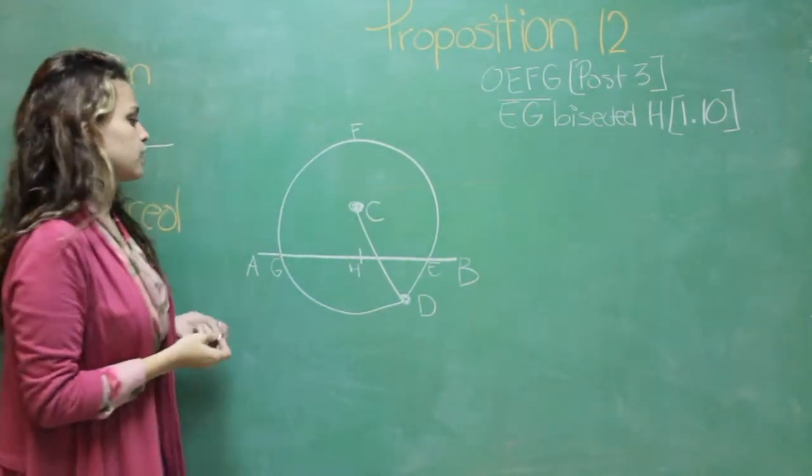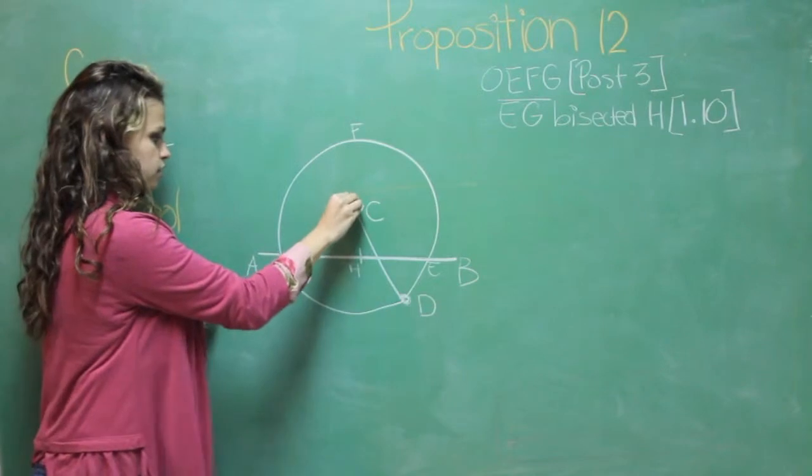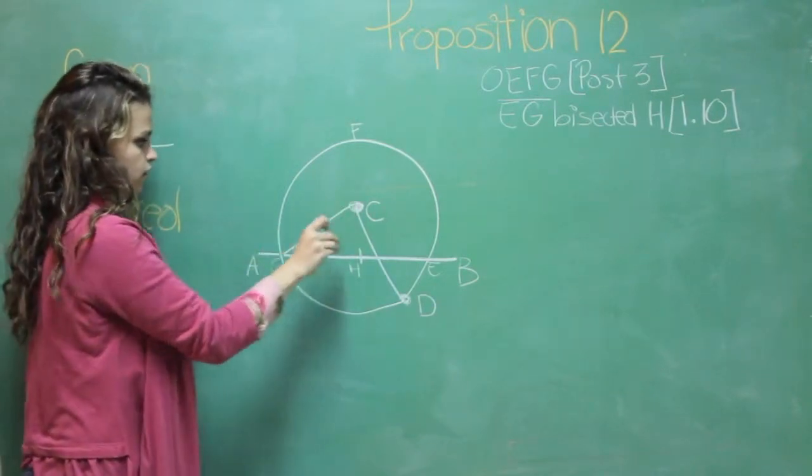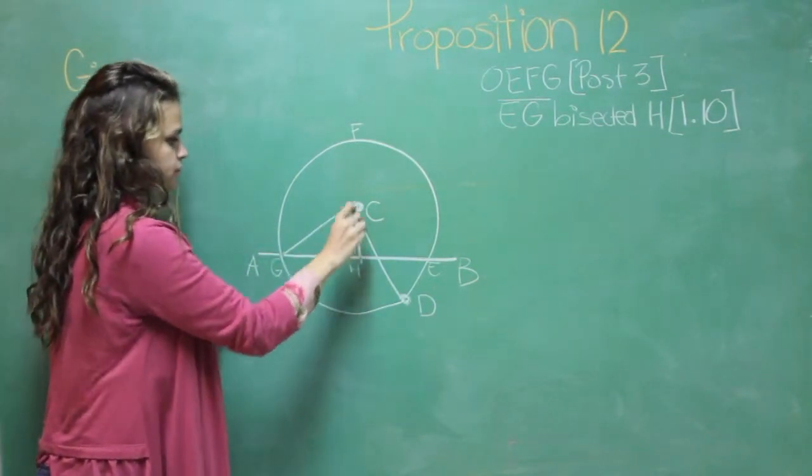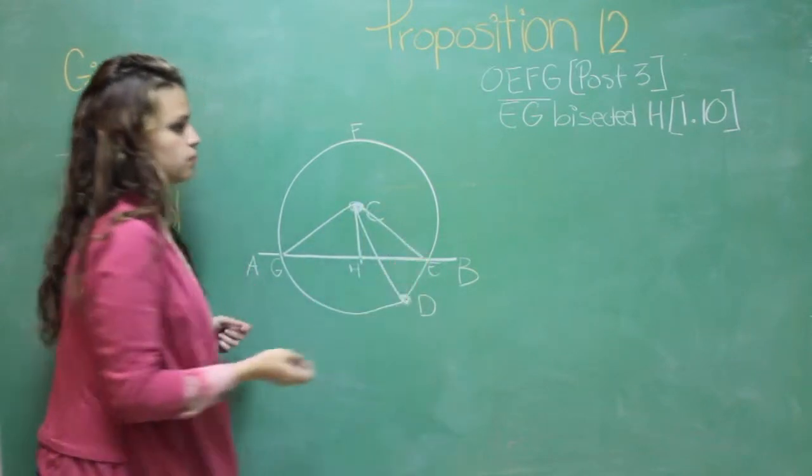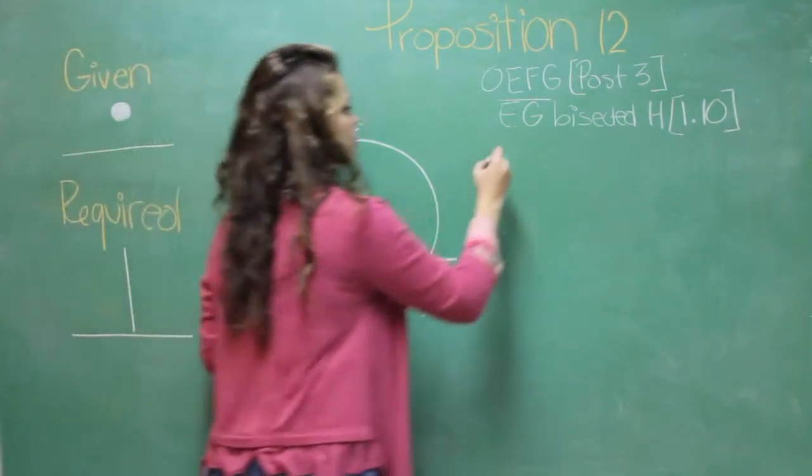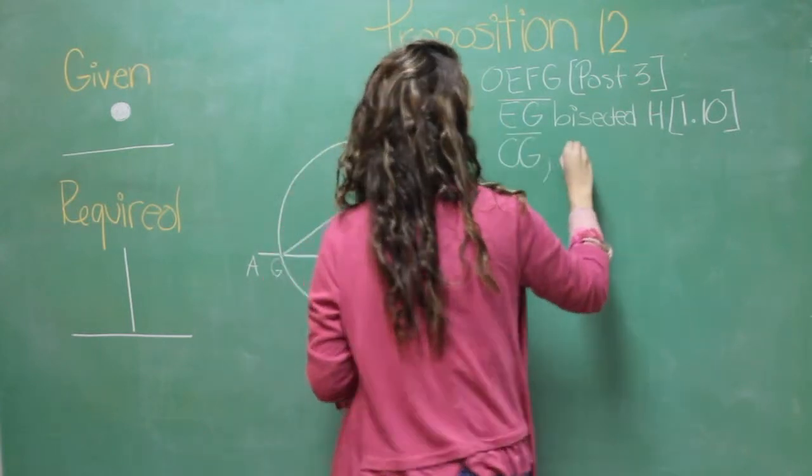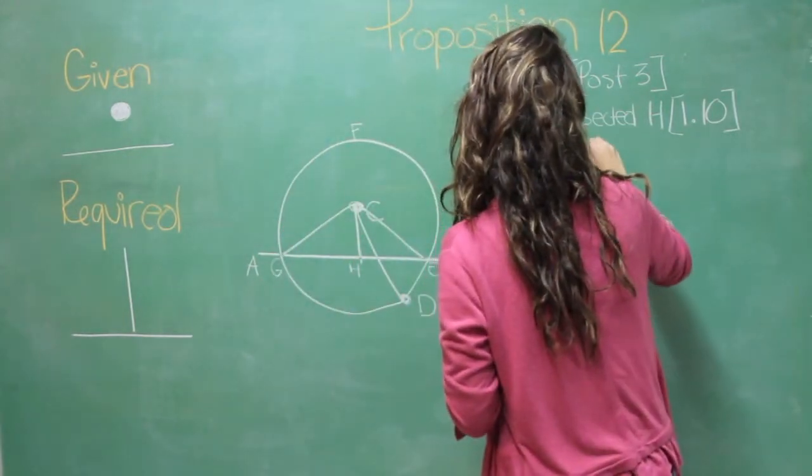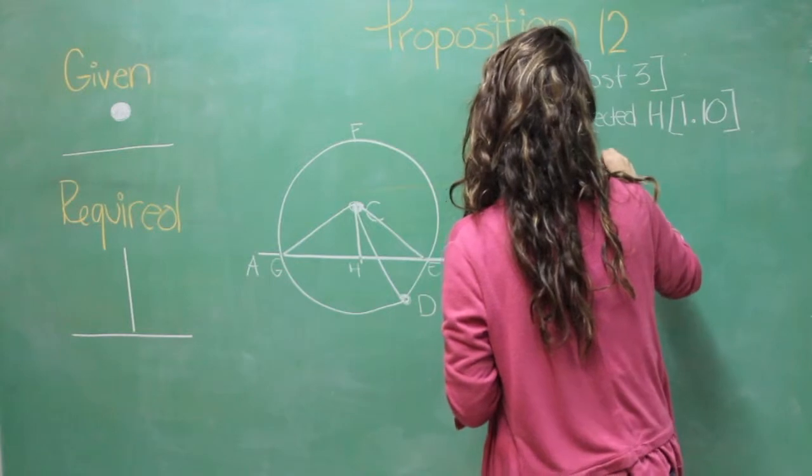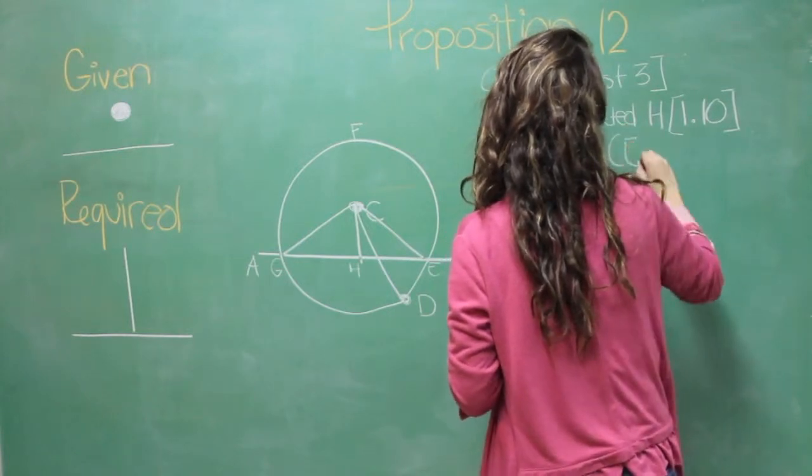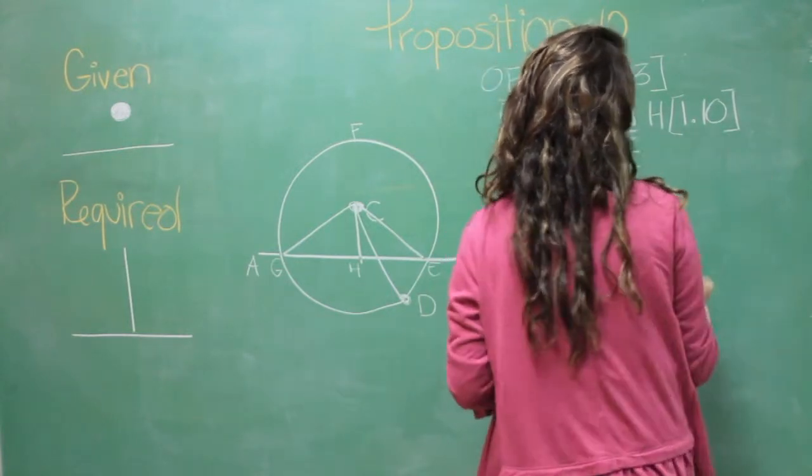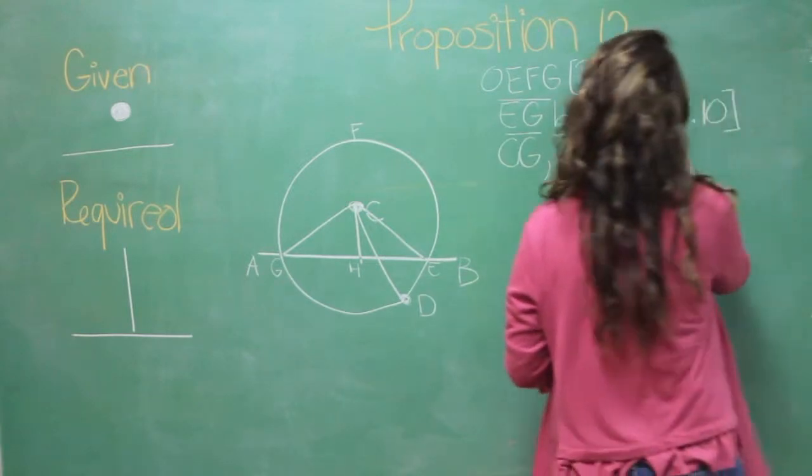Now, let the straight lines CG, CH, and CE be joined. We know this because of postulate 1.